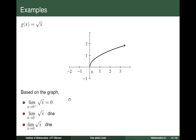Now let's go back to the function g given by the square root of x. Graphically, if we consider the one-sided limit — the limit of the square root of x as x tends to 0 plus — we see that the answer is 0 because the functional values are tending to 0. On the other hand, the limit of g as x tends to 0 from the left does not exist because we cannot consider x values that are less than 0. With these two results, we conclude that the limit of the square root of x as x tends to 0 does not exist.